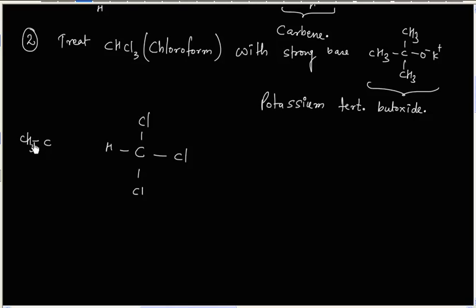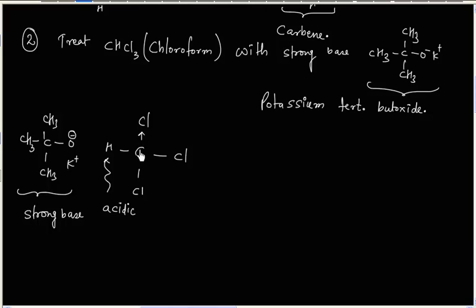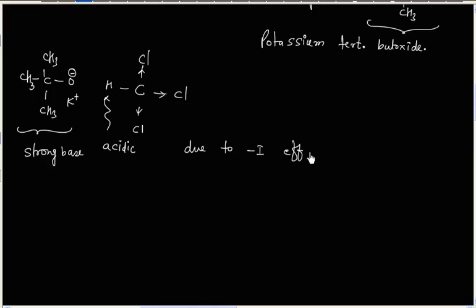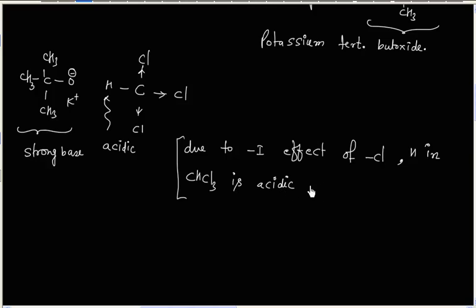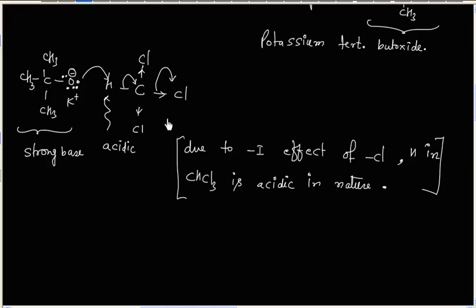The reaction is simply an acid-base reaction. This is a strong base, and this hydrogen is acidic. This happens because of the minus I effect of chlorine. Due to the minus I effect of chlorine, hydrogen in chloroform, that is CHCl3, is acidic in nature. So this hydrogen can be abstracted. We have three lone pairs on oxygen. At the same time, one chlorine atom can leave, so chlorine is acting as a leaving group.